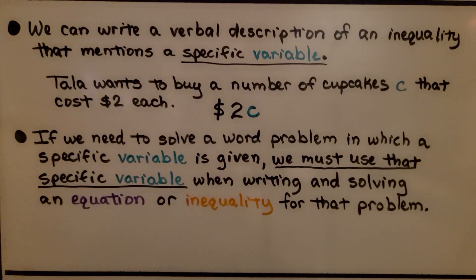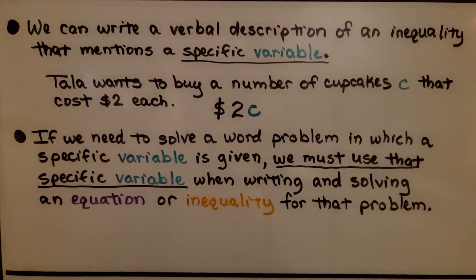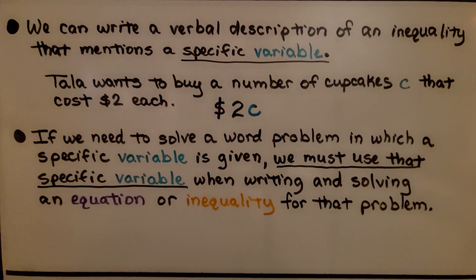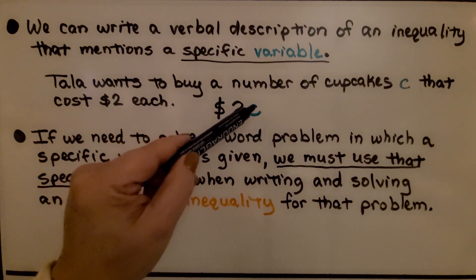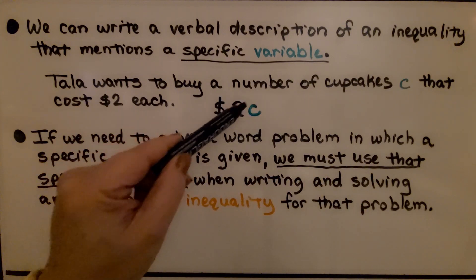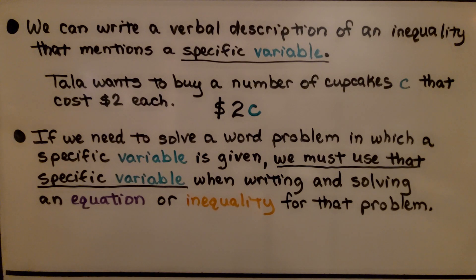We can write a verbal description of an inequality that mentions a specific variable. Tala wants to buy a number of cupcakes c that cost $2 each. We know we have to use that letter c as our variable. We'd have $2 times some amount c. If we need to solve a word problem in which a specific variable is given, we must use that specific variable when writing and solving an equation or inequality for that problem.